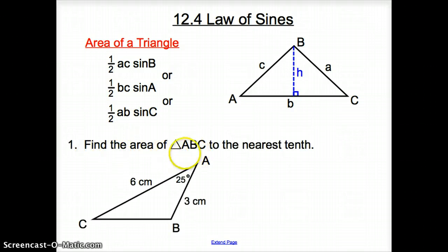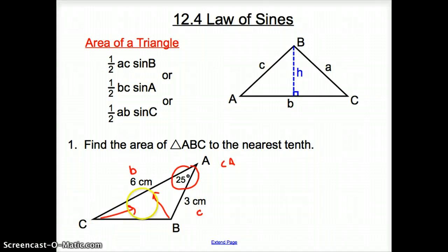We are going to be asked to find the area of triangle ABC to the nearest tenth. So, first thing we have to figure out is what do we have? Well, we have this angle A. So, we have an angle, and it's A. We also have this side here, which is side B, because it's across from angle B.